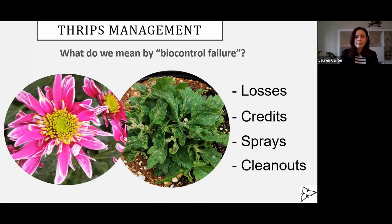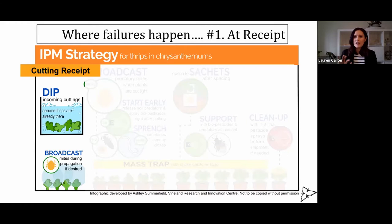So why are we seeing so many of these failures? Well, there are a couple of critical points on the production timeline for different crops where things can go wrong. So we're going to highlight some of those points, because I don't have time to go through this whole program, but again you can see that in other places.